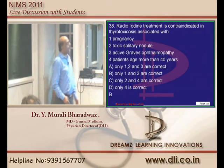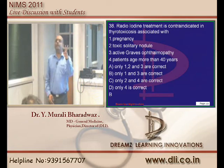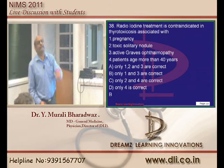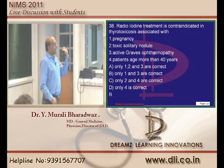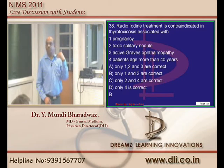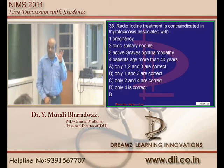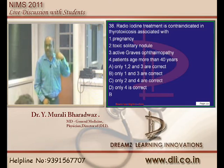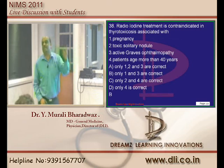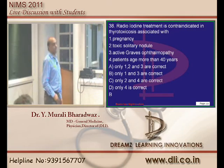Let us talk about radioiodine in thyrotoxic causes. To give radioiodine, there are only two contraindications. One is pregnancy, which is an absolute contraindication. Second, if a patient has thyrotoxicosis due to Graves disease and already has ophthalmopathy, giving radioiodine may worsen the ophthalmopathy - so that is a relative contraindication.